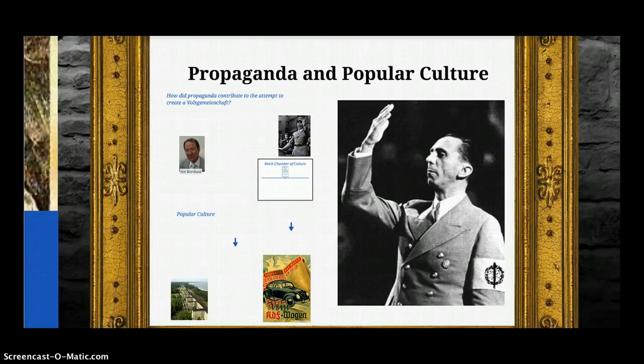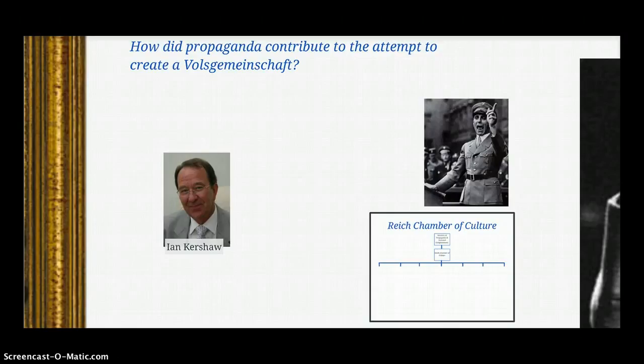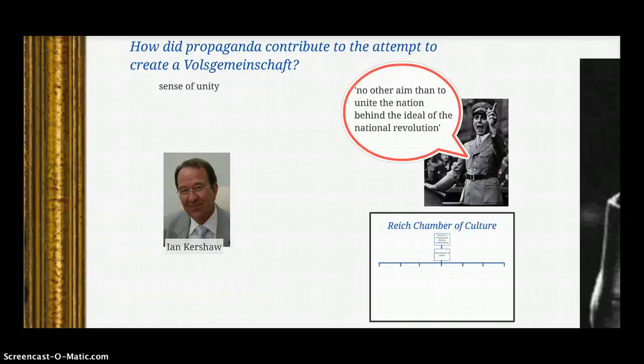Volksgemeinschaft — how did the Nazis go about trying to achieve it, changing people's hearts and minds? Propaganda and popular culture are ways to influence people's beliefs. In March of 1933, Goebbels — the Gauleiter of Berlin — was appointed Minister of Propaganda and National Enlightenment. There's something of a contradiction between propaganda and enlightenment, but that wasn't perceived by the Nazi regime. Goebbels himself said, 'No other aim than to unite the nation behind the ideal of the national revolution.' Propaganda took the form of posters and slogans seen throughout German towns and cities.